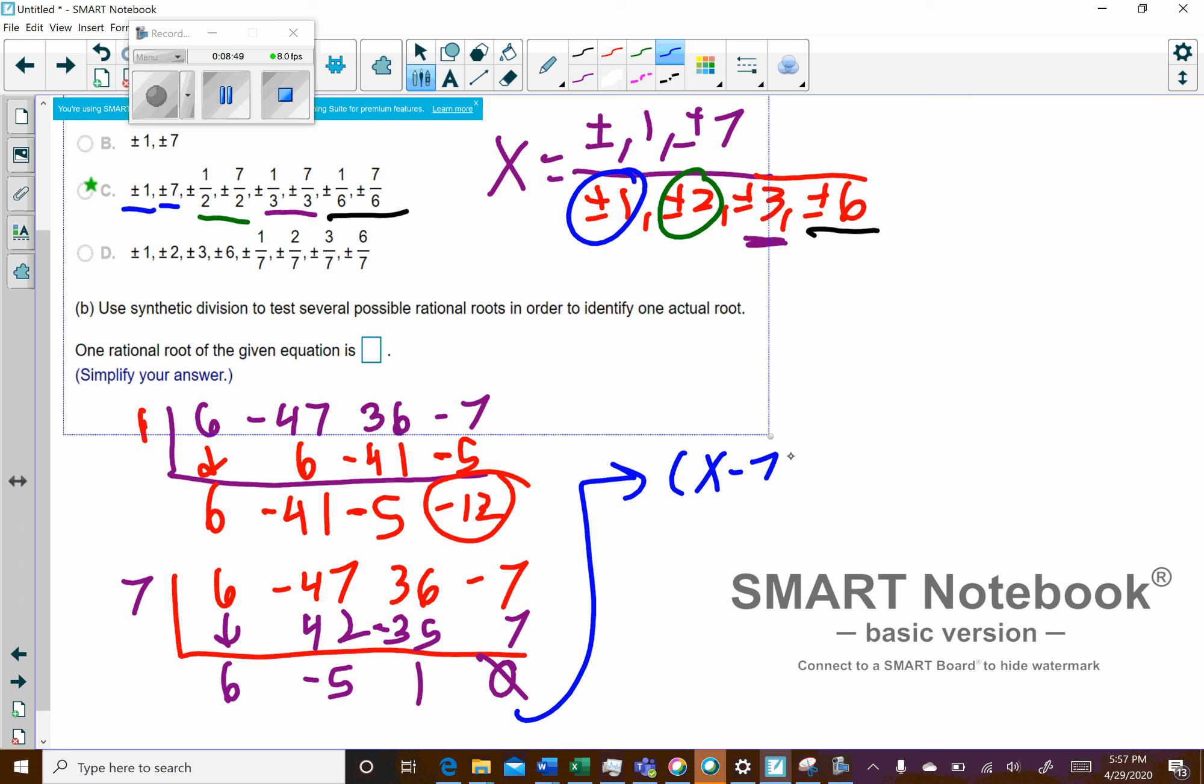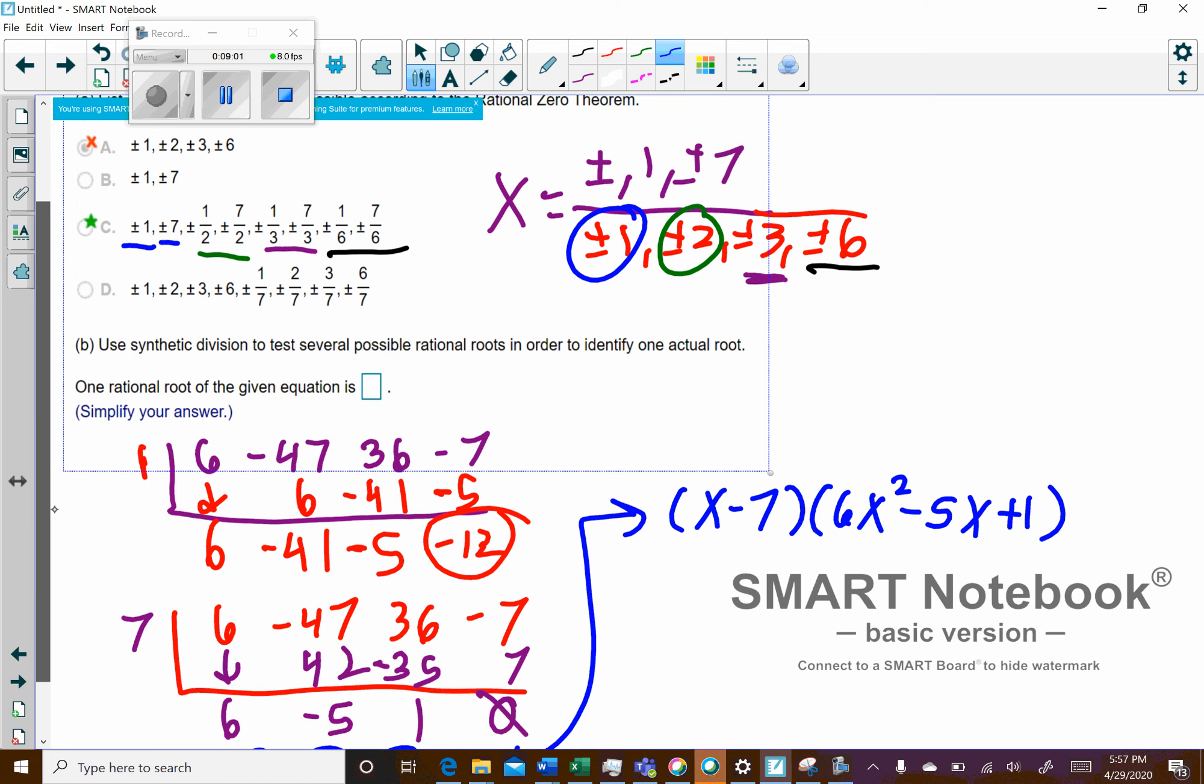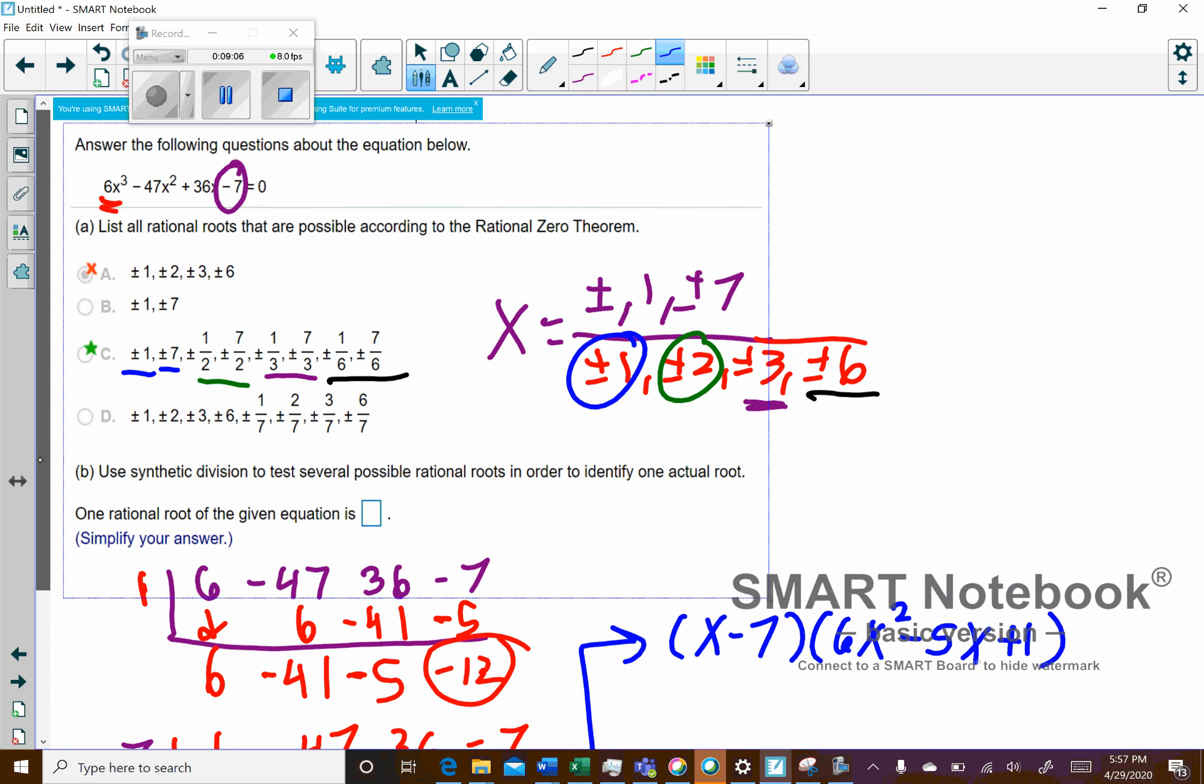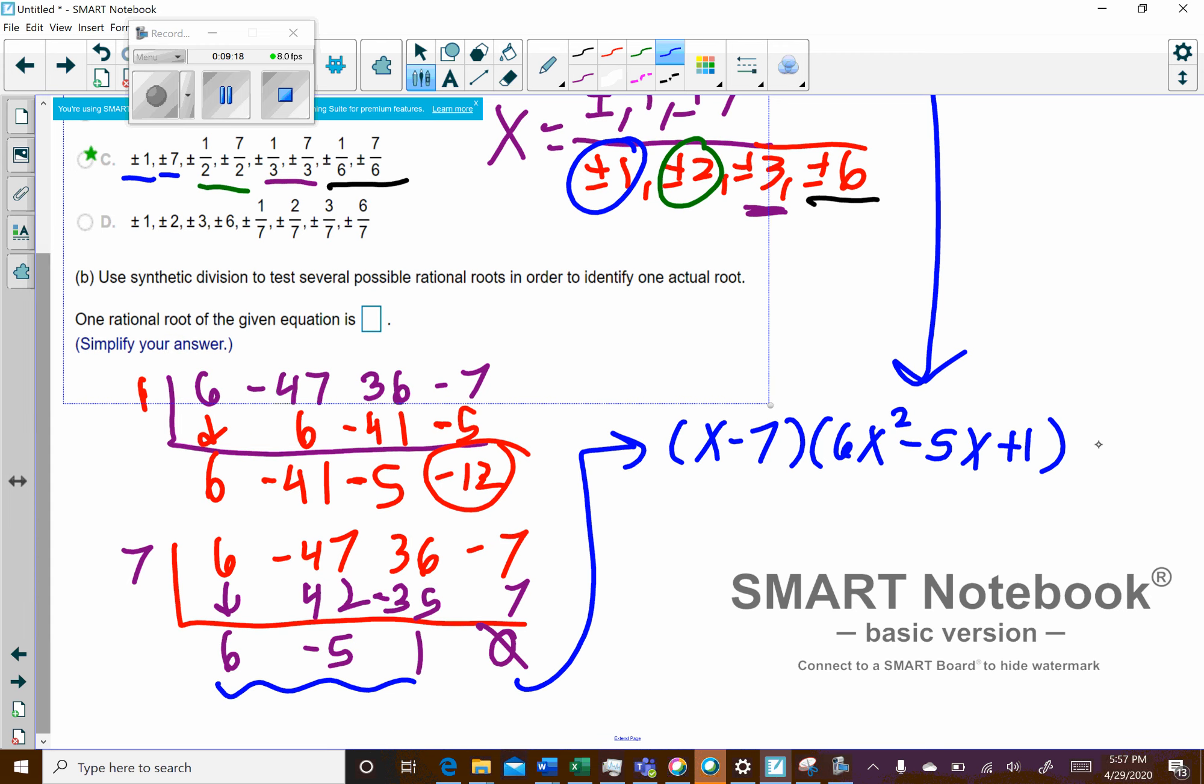And so basically what happened was you figured out 7 was a solution. So what's going on is that means x minus 7 was one of the factors, and my remainder is what's left behind, which would be 6x squared minus 5x plus 1. So you just drop it down by a power. So basically what I've done using the rational root theorem here is I tried solutions until I got one, and basically what I've done is I've factored this.